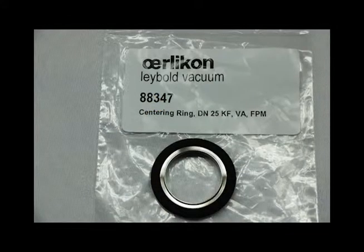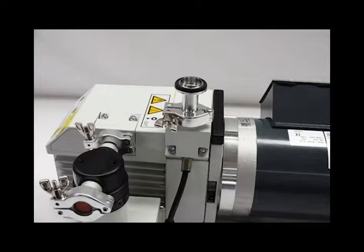Place the DN25 centering ring, part number 88347, on the free end of the reducer.